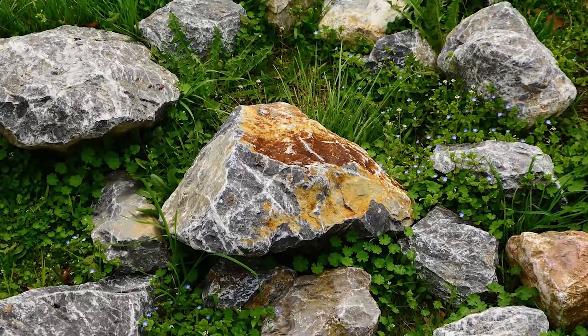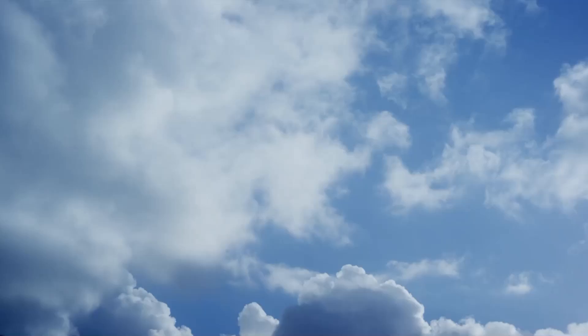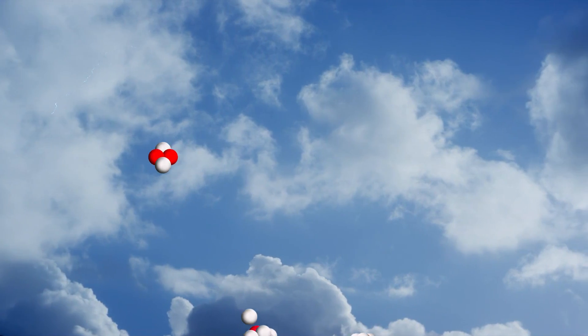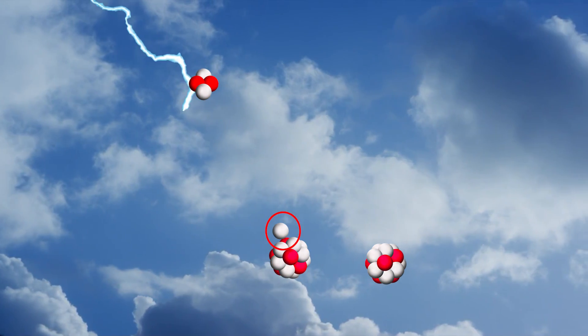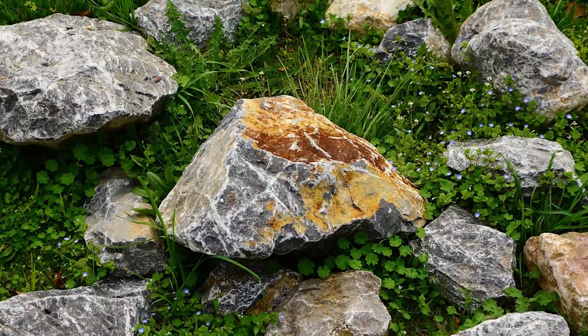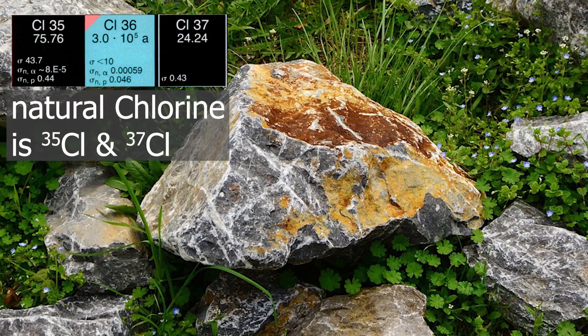Why is Chlorine-36 important? Well, geologists quite like this radionuclide. It's of cosmogenic origin. Secondary neutrons produced by spallation reactions occurring in the upper atmosphere hit rocks. Most rocks contain chloride. Naturally chlorine consists of Chlorine-35 and Chlorine-37.